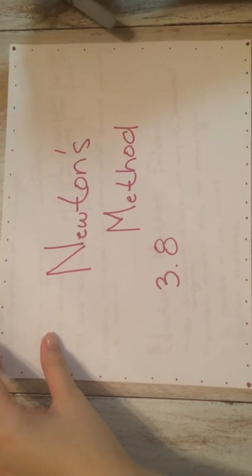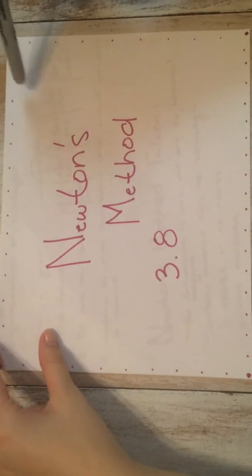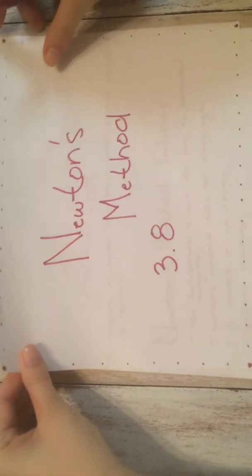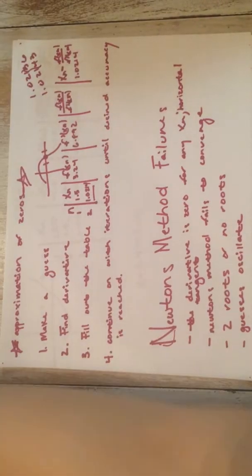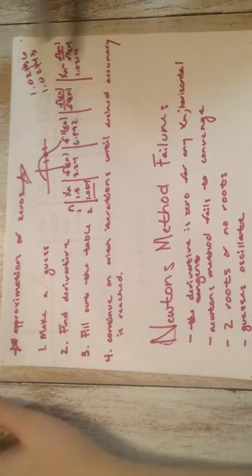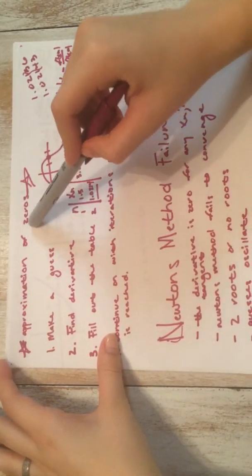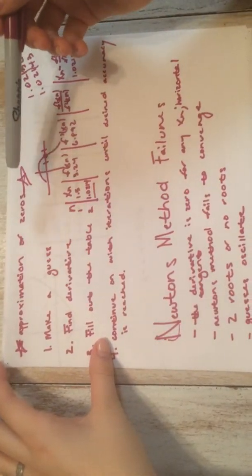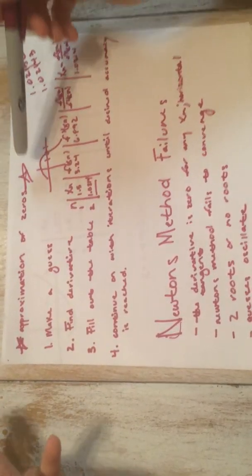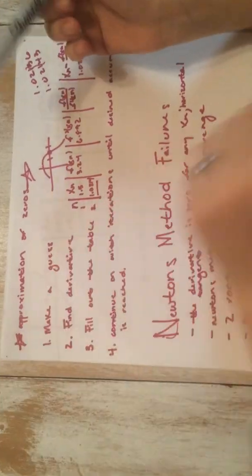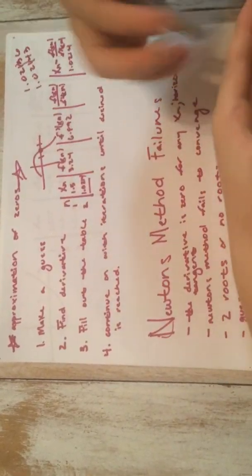Today we're going to be learning about Newton's method, which is in Chapter 3, Section 8 of your textbook. We use Newton's method to approximate zeros. It doesn't find the actual number, but we can usually get close enough to where it's almost the actual number.